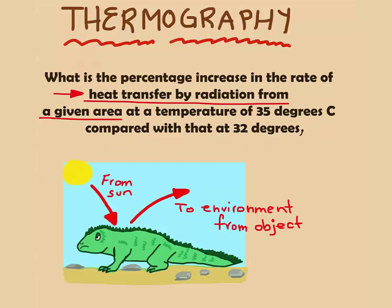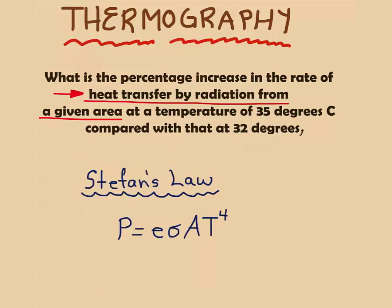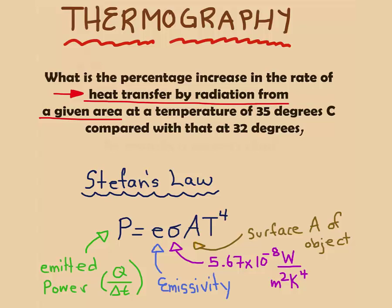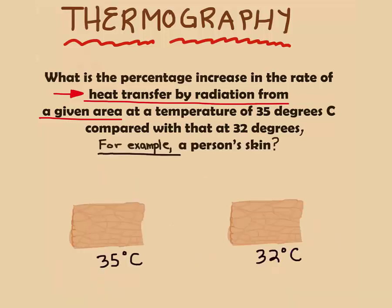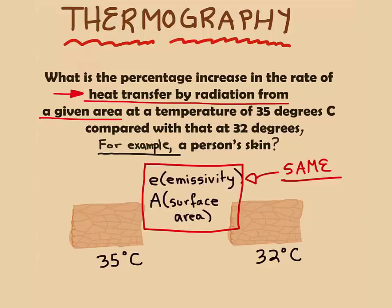Now that we know this, we can return to the question and compare emitted power using Stefan's law. This is an equation that relates emitted power to emissivity, temperature, area, and a constant. In this case, we're using human skin at different temperatures. Since it's the same object, emissivity and area are the same.